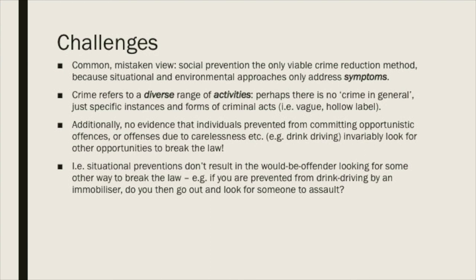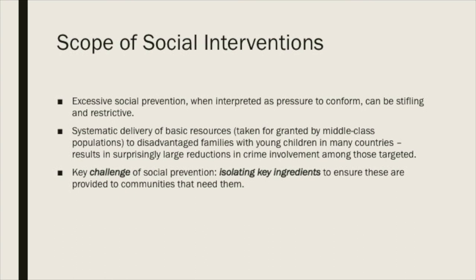It's also worth keeping in mind that excessive social prevention can be interpreted as pressure to conform, and that can be stifling and restrictive. That said, the systematic delivery of basic resources — which get taken for granted by middle-class populations — to disadvantaged families with young children has resulted in surprisingly large reductions in crime involvement. One of the key challenges is isolating those key ingredients to ensure that these are provided to the communities that need them.